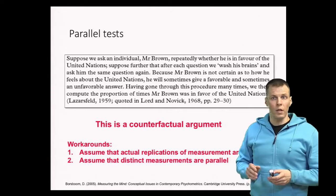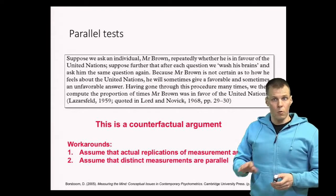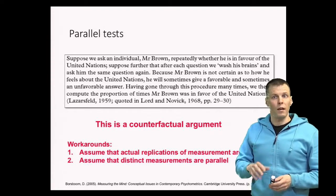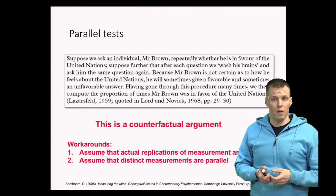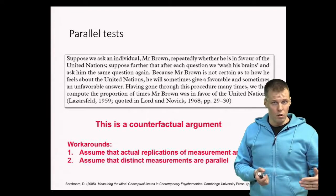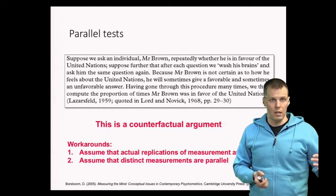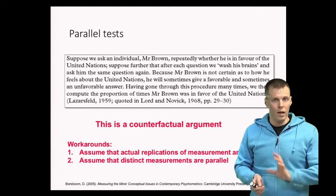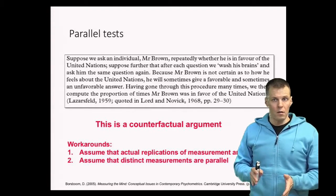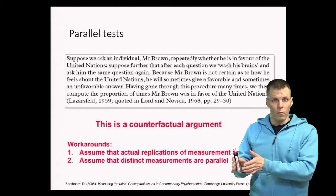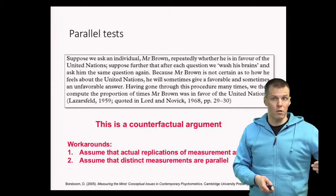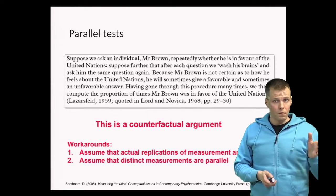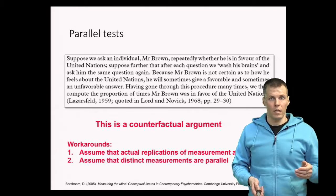Another way is to use two distinct measures — measuring the same attribute in a different way and assuming those two different ways of measuring the same thing are parallel. Instead of asking the person whether he likes the United Nations, we could ask whether he thinks the United Nations is the best thing that ever happened to mankind. We measure the same thing, but slightly differently, so the second measurement is not as much influenced by the first as it would be if we just repeated the same question. This first approach — repeating the exact measurement with a time delay — is called test-retest reliability.